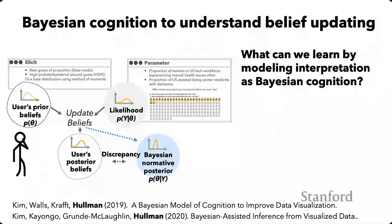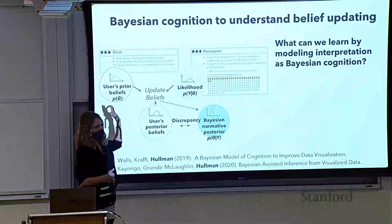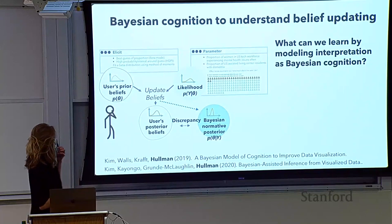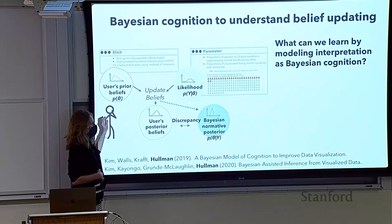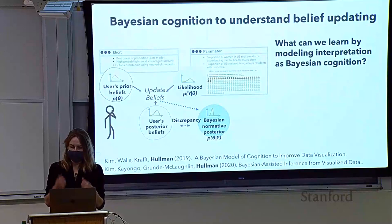My former PhD student Yesel Kim and I started using Bayesian models of cognition to look at how well people seem to update their beliefs given visualized data. The experimental paradigm involves either eliciting or endowing people with prior beliefs about some parameter — for example, the proportion of people in some population that have a disease. Then we show them data, like a survey of how many people in some sample have the disease, which represents the likelihood of different possible values of that parameter. We can then elicit their posterior beliefs and compare those to what we would expect if the user was a normative Bayesian agent who perfectly updated their beliefs given the prior and likelihood function. It gives us a way to think about how much information people are getting from a visualization relative to what a rational agent would get.